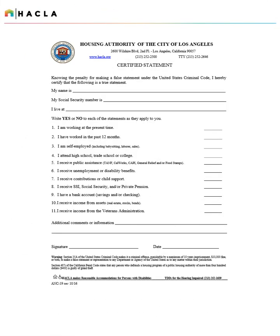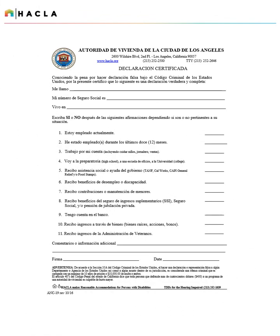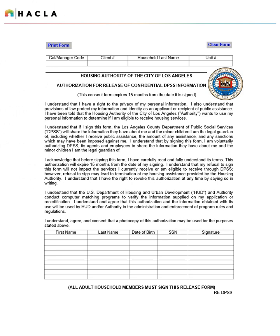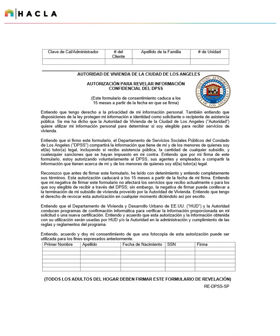The certified statement is a series of yes or no questions regarding the family's income and assets. Any information reported throughout the application should be supported by this form. Each adult household member must complete this form. The yes or no certified statement is available in Spanish. This form authorizes the Department of Social Services to share information with the Housing Authority. All adults must sign this form. The DPSS form is available in Spanish.